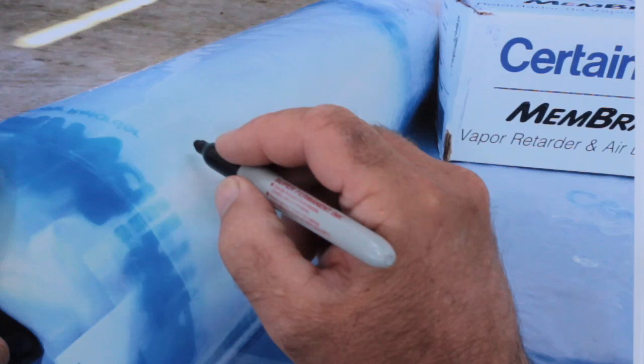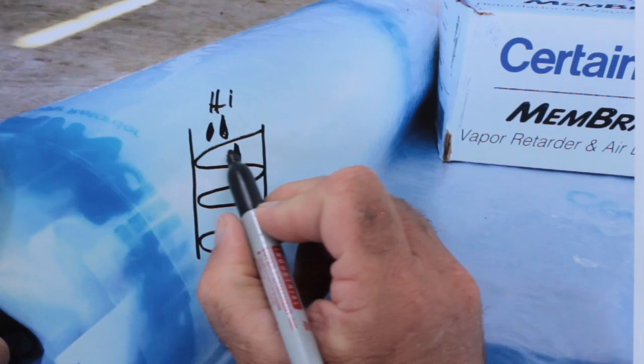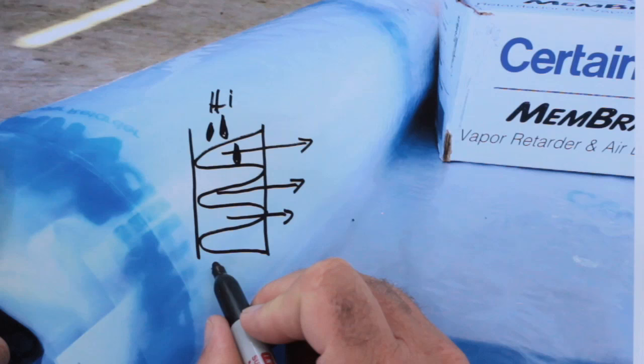Once again, take a look at this wall cross-section. With this product applied, if there ever does happen to be high moisture buildup inside the wall, it has the capacity to let that moisture dry. It actually goes through this particular poly. When the internal wall cavity humidity is low, it acts as a conventional vapor barrier to stop more moisture moving in.